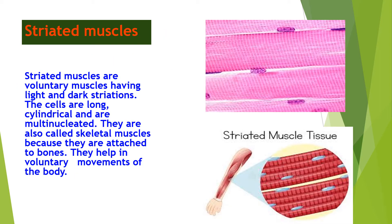The next is striated muscles. Striated muscles are voluntary muscles having light and dark striations. You can see the banding pattern of the muscles in the picture. The cells are long, cylindrical, and multi-nucleated. They are also called skeletal muscles because they are attached to bones. They help in voluntary movement of the body, like the movement of the leg and the movement of the hand. All these are controlled by striated muscles.